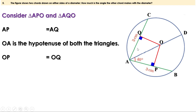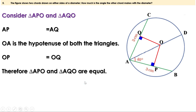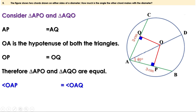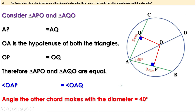The three sides of triangle APO are equal to the three sides of triangle AQO, so the triangles are equal. When two triangles are equal, the angles opposite to equal sides are equal. These two sides are equal, so the angles opposite to them — angle OAP and angle OAQ — are equal. Since angle OAP is 40 degrees, angle OAQ is also 40 degrees. That is, the angle the other chord makes with the diameter is 40 degrees.